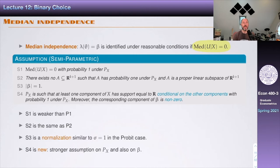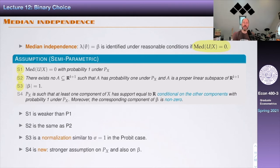The semi-parametric assumptions S1 through S4 are as follows. S1: the median of U given X is zero. S2: there is no proper linear subspace of R^{K+1} where X lies with probability one — same as P2. S3: a normalization, similar to sigma equals one in the probit case — not surprisingly, if you assume less than a parametric model you still need a normalization for beta. S4 is new: at least one component of X has support equal to the real line conditional on all other components with probability one, and the corresponding beta for that X is nonzero.